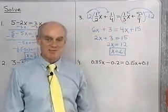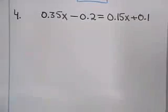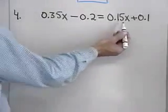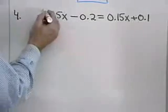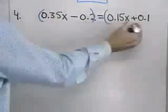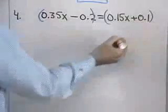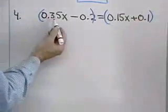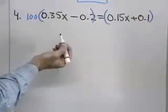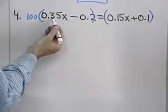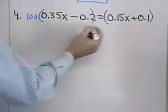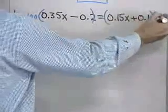Here's a problem that involves decimals. I'll do the same type of thing — I could work with the decimals, or I could multiply both sides by a power of 10 that will remove the decimals. Since I have 0.35 and 0.15, I'll multiply both sides by 100.